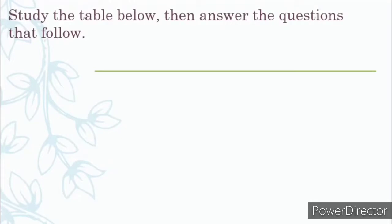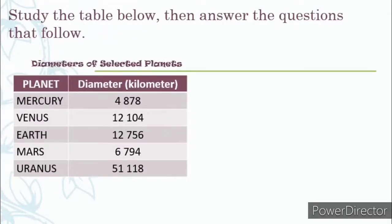Before anything else, let's study the table below, then answer the questions that follow. Diameters of Selected Planets — this is the title of the table. Here are the planets and their diameter in kilometers: Mercury with a diameter of 4,878 km, Venus with 12,104 km, Earth with 12,756 km, Mars with 6,794 km, and Uranus with 51,118 km.